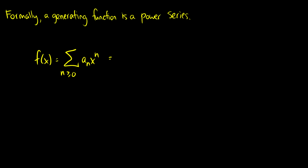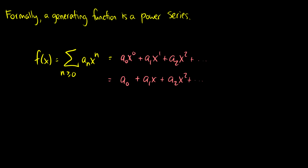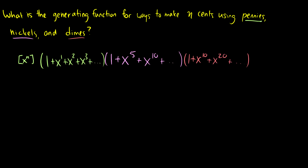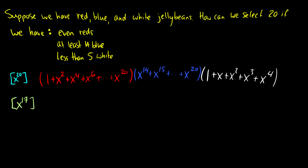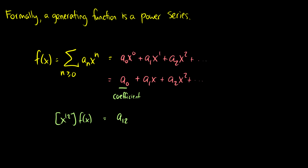What really is a generating function? We have a power series here. A power series is basically the sum of a coefficient with a power of x: a0·x^0 plus a1·x^1 plus a2·x^2, and so on. More cleanly: a0 plus a1·x plus a2·x squared, and so on, where each a is the coefficient. So when we ask for the coefficient of x to the 12 of some function, the answer is whatever a12 is. When we look at these generating functions, all of our coefficients are just 1, but when we multiply them out they become different numbers representing the number of ways to do what we're asked.